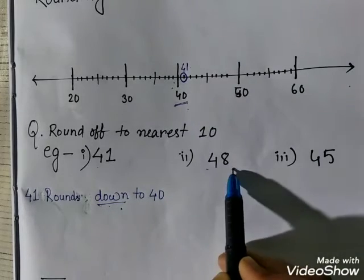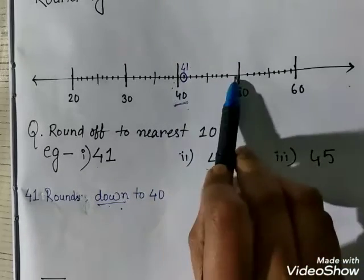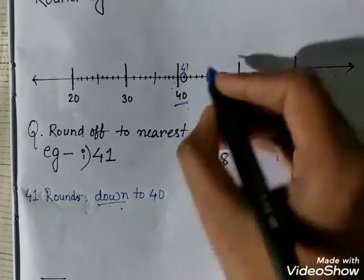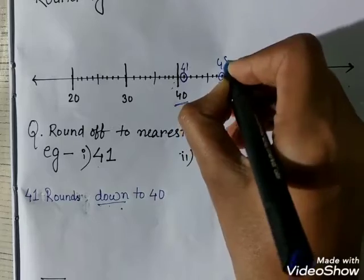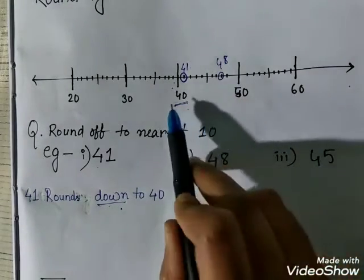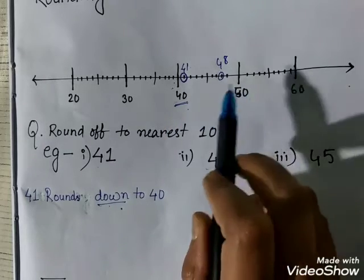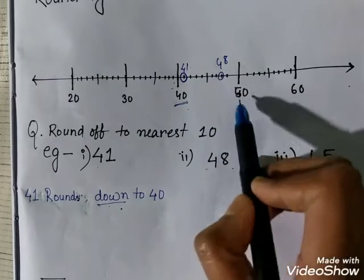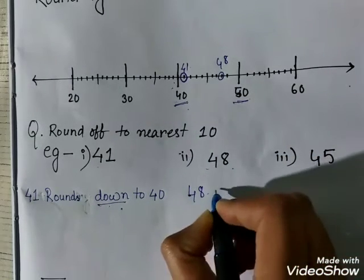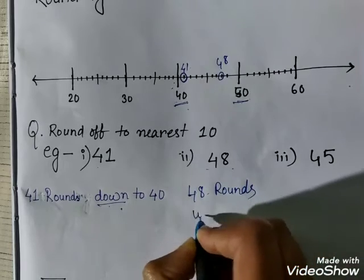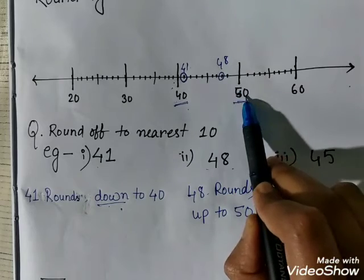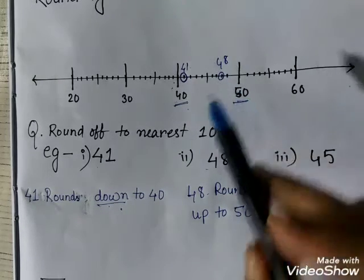The next example is 48. Finding 48 on the number line: 41, 42, 43, 44, 45, 46, 47, 48 — this point is 48. Now, is 48 nearer to 40 or 50? It is pretty clear that it is nearer to 50. So we write: 48 rounds up to 50, because 48 is nearer to 50.